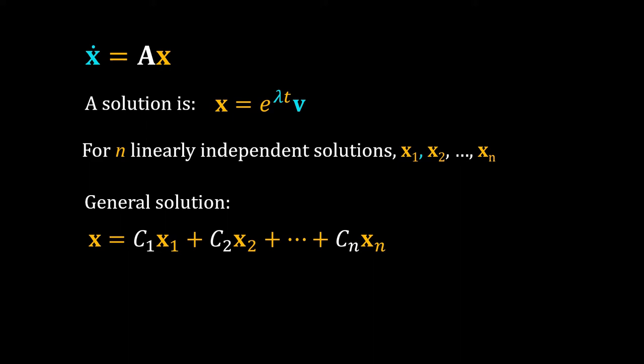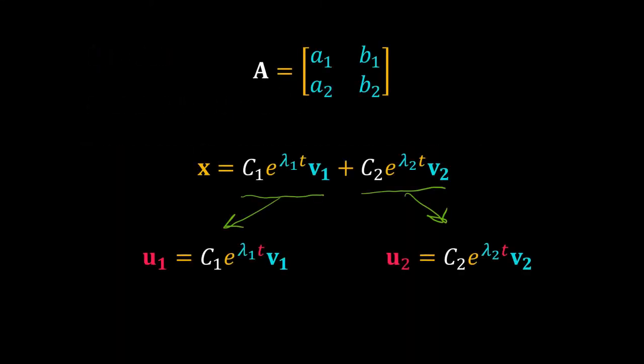Particularly, the eigenvalues define the stability. Let's explore the stability issue using a two-dimensional system. We have a system of two dependent variables; the eigenvalues are lambda 1 and lambda 2, and the corresponding eigenvectors are v1 and v2. To get the position vector, we multiply these two eigenvectors by two scalar quantities and sum them. For example, we multiply v1 by c1 times e to the power lambda 1 t, giving vector u1. With time, the scalar term c1 times e to the power lambda 1 t will either increase or decrease depending upon the sign of lambda 1.